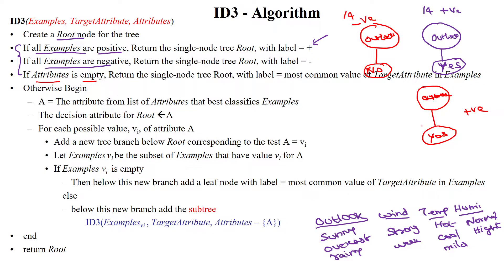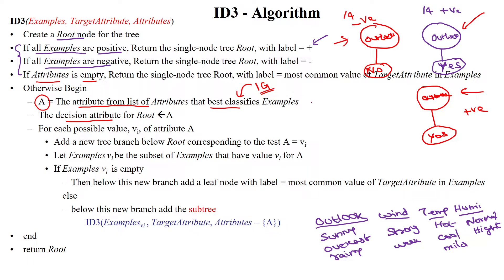These are the three base cases. Otherwise, if all samples are neither all negative nor all positive, and there are more attributes available, we start calculating the entropy. We select the attribute from the list of attributes that best classifies the data — by calculating the information gain. Whichever attribute gives more information is selected as the best attribute A, which is assumed as the root node.